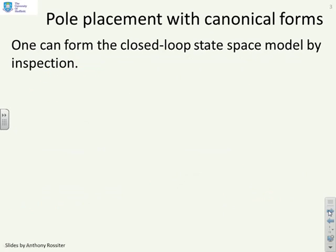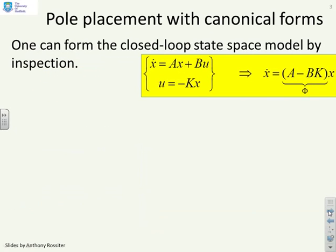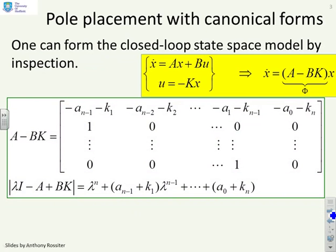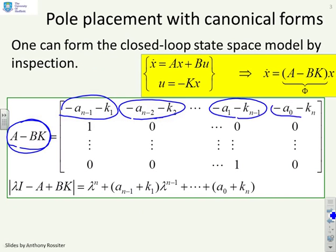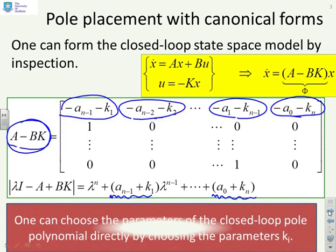Pole placement with a canonical form. This is a reminder of how you might do a design. If you have a system in canonical form, when you find the closed loop A minus BK, the top row coefficients depend on the parameters in your state feedback K. You can choose those top row coefficients to be exactly what you want, and those coefficients are the coefficients of your closed loop polynomial.